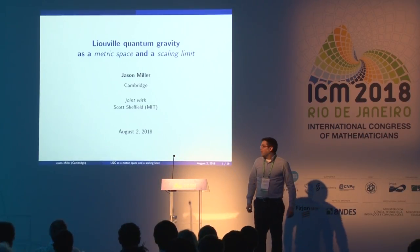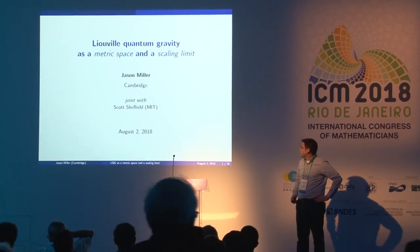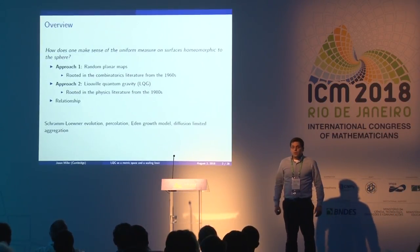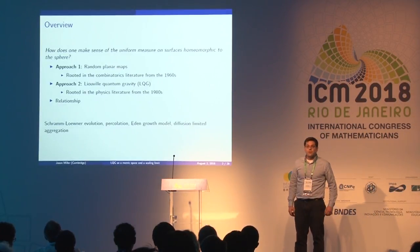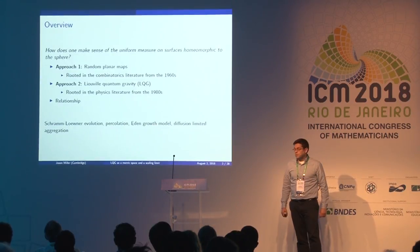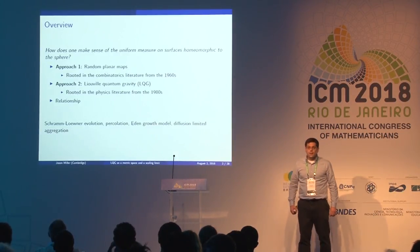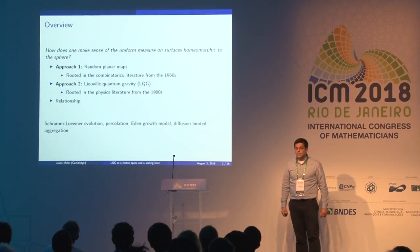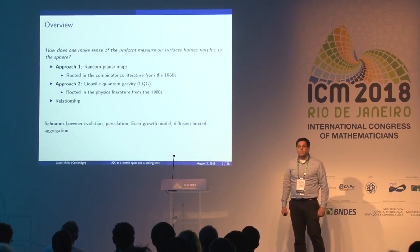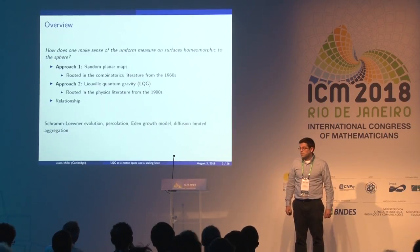What I'm going to be talking about is based on a series of works done in collaboration with Scott Sheffield from MIT. The basic question is: how do you make rigorous sense of what it would mean to pick a surface uniformly at random which is homeomorphic to the sphere? There have been two different approaches: the first is a discrete approach called random planar maps, rooted in combinatorics literature from the 1960s, and the second is Liouville quantum gravity, rooted in the physics picture from the 1980s.